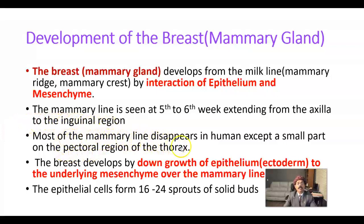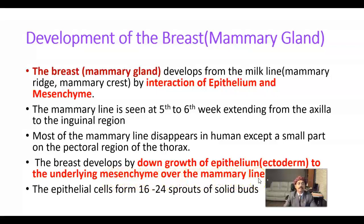Most of the mammary line disappears in humans except a small part on the pectoral region of the thorax. The breast develops by downgrowth of epithelium — that is, the surface ectoderm — to the underlying mesenchyme derived from the somatopleuric mesoderm, over the mammary line, also called mammary ridge or crest or milk line.